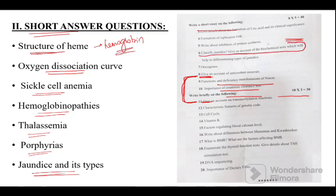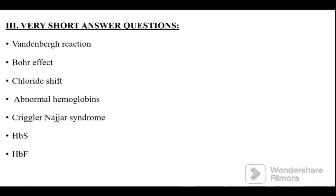biochemical tests which help in differentiating the type of jaundice, that is lab diagnosis of jaundice along with classification of jaundice was given as a short answer question. And very short answers: Vandenbergh reaction, Bohr effect, chloride shift...